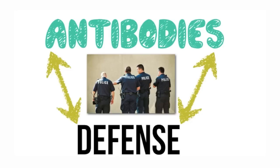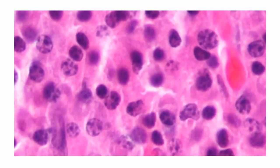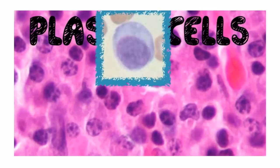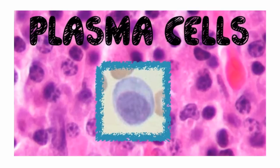Antibodies equal defense. Now, where do they come from? Here is a beautiful image of cells — these are the cells that either produce or secrete antibodies, known as plasma cells. I have here a zoomed image of a plasma cell. So plasma cells produce and secrete antibodies, and we're going to see a little bit how later on in this tutorial.